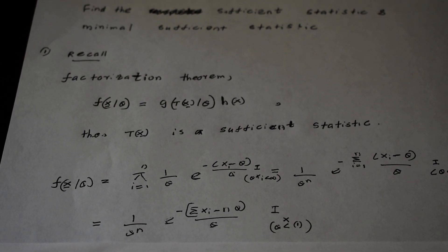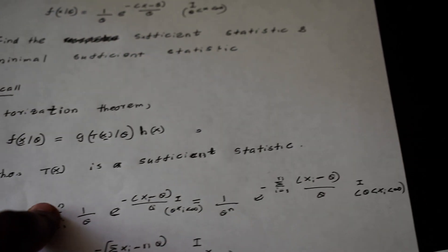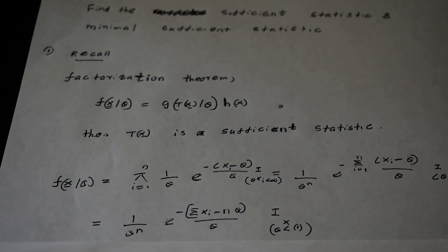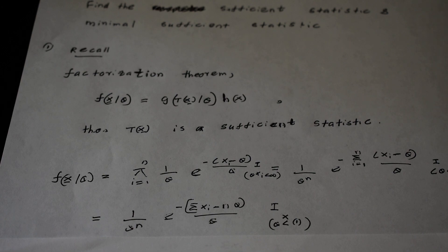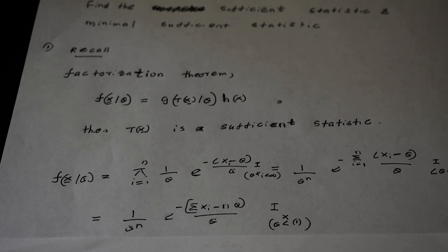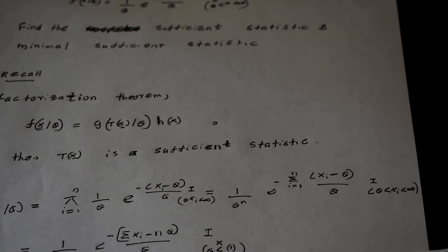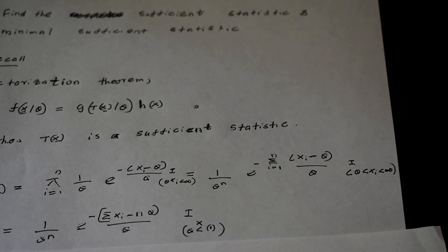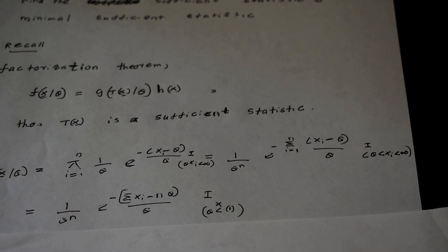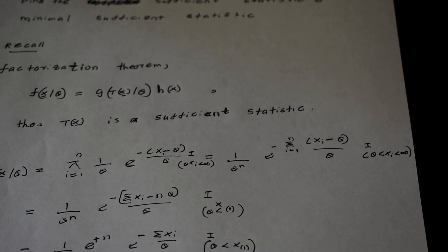Simplifying further, we can separate the exponential expression: (1/theta)^n times e to the power of negative [sum of xi minus n*theta] divided by theta. We can also rewrite the indicator function as an indicator that the minimum order statistic x_(1) is greater than theta, since all x values being between theta and infinity is equivalent to the minimum order statistic being greater than theta.